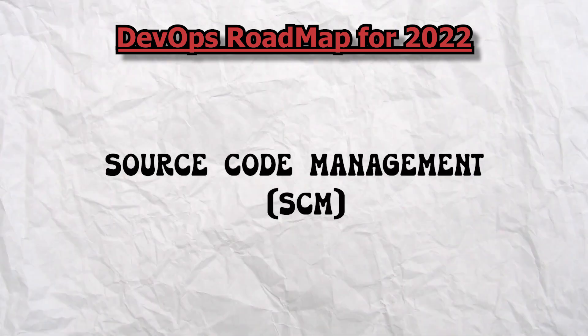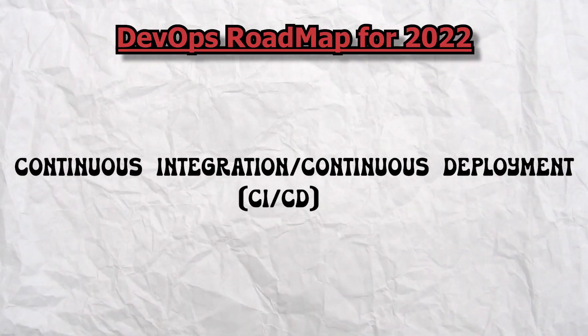Data point one is Source Code Management (SCM). In most companies you will have three sets of tools: GitLab, GitHub, and Bitbucket. Among these three, you have to learn GitHub or GitLab because most companies are going with these two tools. Bitbucket is also used — companies like Wipro and TCS use it — but under data point one, you will need to learn GitLab and GitHub.